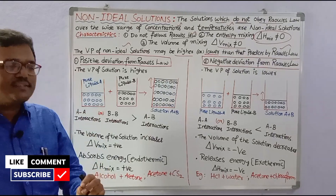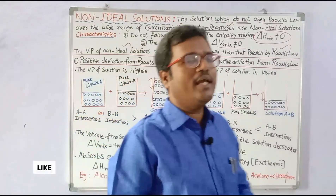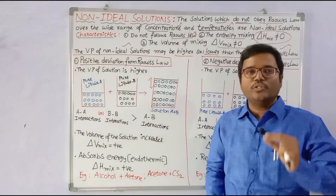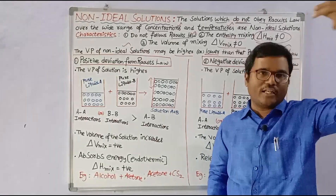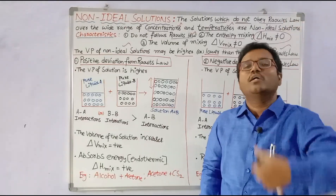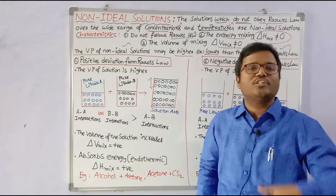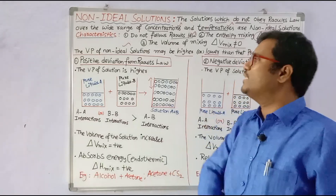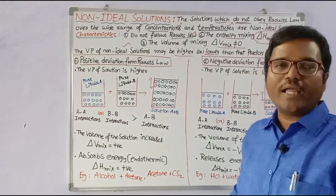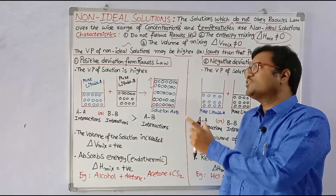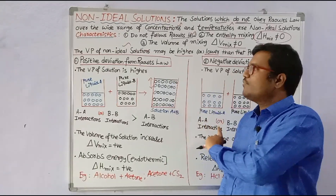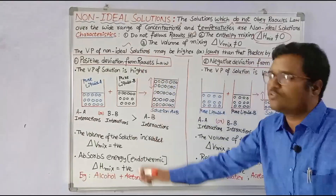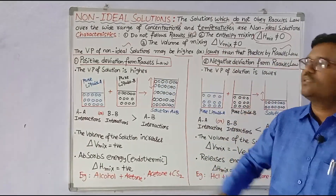The vapor pressure of non-ideal solutions may be higher or lower than that predicted by Raoult's law. Based on this, we can classify the deviations into two categories: positive deviation and negative deviation.